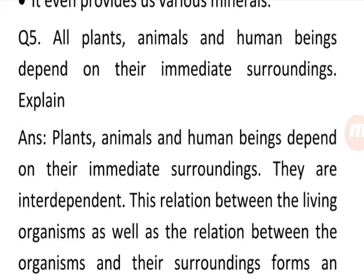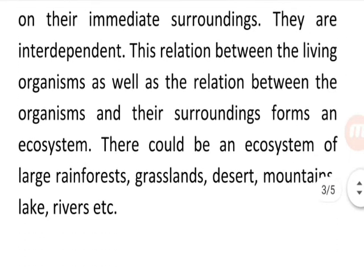Question 5: All plants, animals and human beings depend on their immediate surroundings — explain. Answer: Plants, animals and human beings depend on their immediate surroundings and are interdependent. The relation between living organisms as well as the relation between organisms and their surroundings forms an ecosystem. There could be an ecosystem of large rainforests, grasslands, deserts, mountains, lakes, rivers, etc.